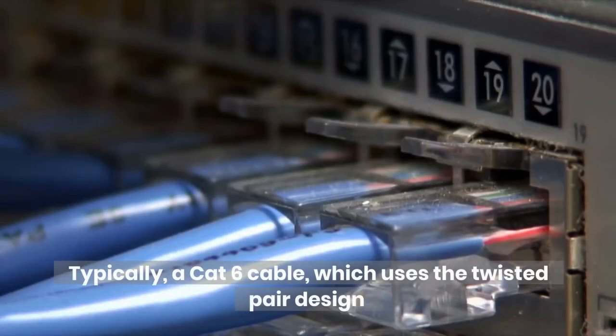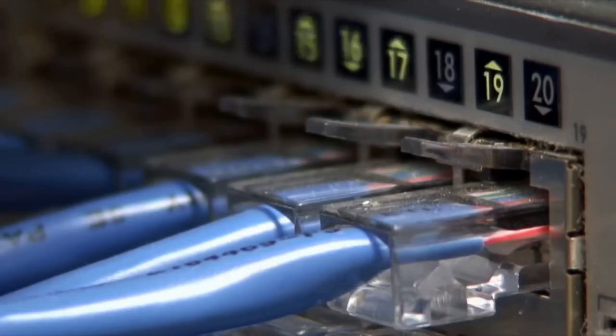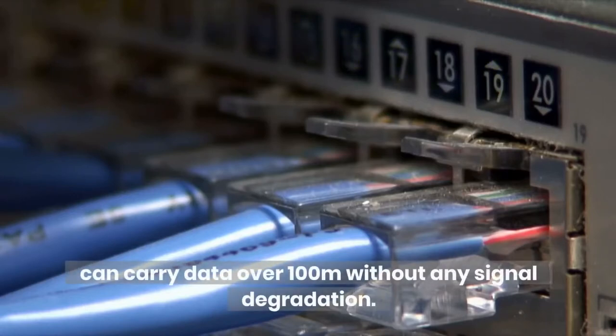Typically, a CAT6 cable, which uses the twisted pair design, can carry data over 100 meters without any signal degradation.